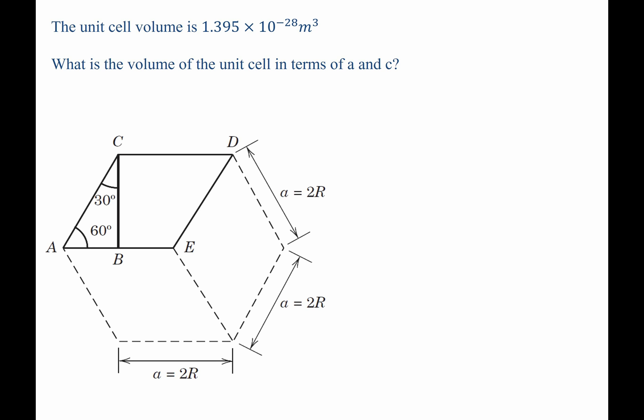Looking down the c-axis along the basal plane, we see the following figure. They show that the unit cell of a hexagonal close-packed system can actually be thought of as three parallelepipeds. And therefore, to determine the volume of this unit cell, we simply need to determine the volume of an individual parallelepiped and then multiply it by three.